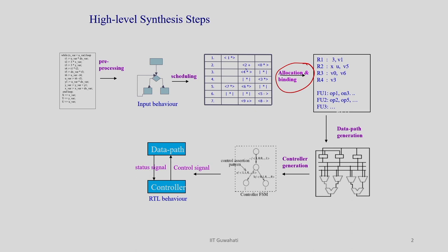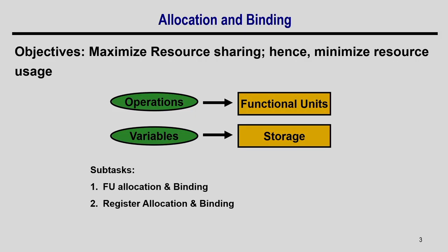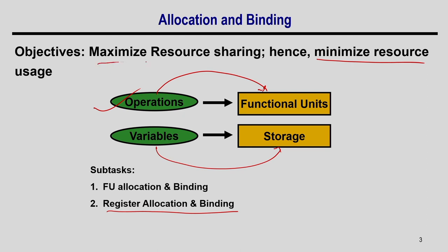At this point, the scheduled behaviour is available with us. We know exactly which operation is scheduled at which timestamp. What we have to do now is map those variables to the registers and operations to the function units — that is what is called allocation and binding. Our objective is to map operations to function units and variables to storage, basically registers and RAM.